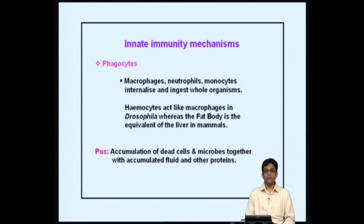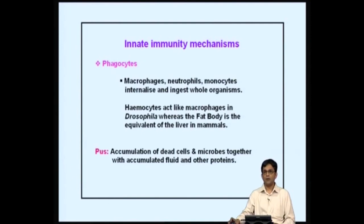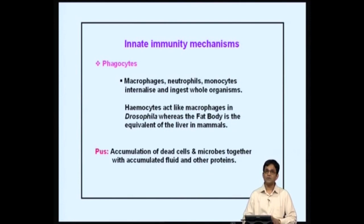Cellular mechanisms involve macrophages, neutrophils, and monocytes, which internalize and ingest whole microorganisms. The innate immune response is also present in lower organisms: in Drosophila, hemocytes act like macrophages and the fat body acts as the equivalent of the liver in mammals. Pus is an accumulation of dead cells and microbes together — an example of how the response is contained and limited.